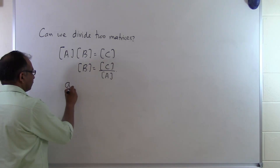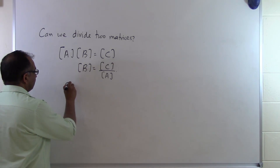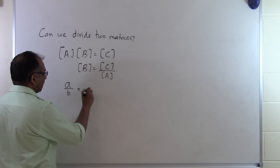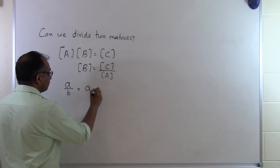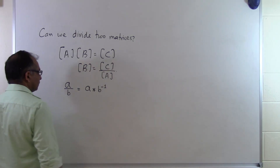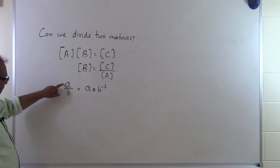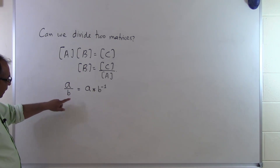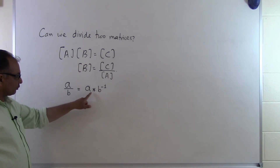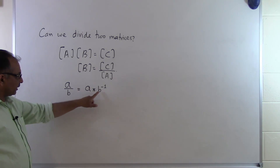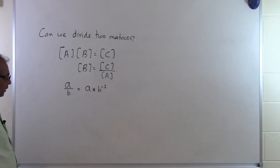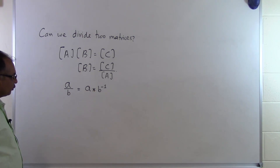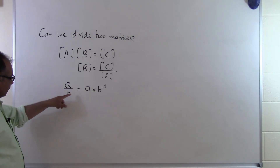Let's think about scalars. If you have real numbers, A divided by B can also be written as A times B inverse. So you can take A divided by B and relegate it into a multiplication of two numbers, where you multiply A times the inverse of B. There is a mechanism for finding this inverse of B to change division into multiplication.